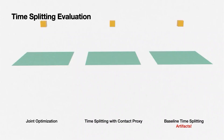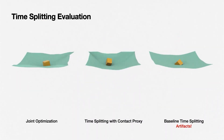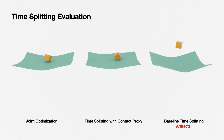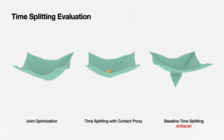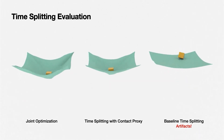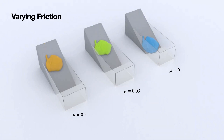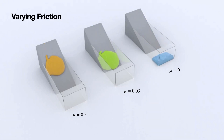Similarly, our contact proxy also allows us to robustly separate elasticity from contact potential energy. Our method also supports adjustable boundary friction between solids and fluids.